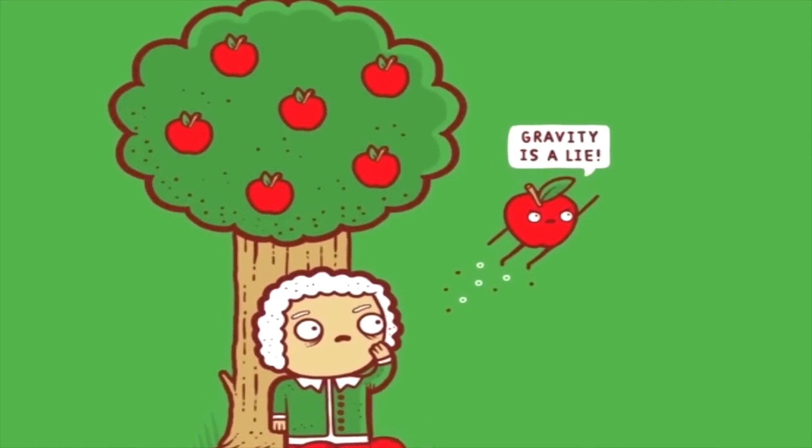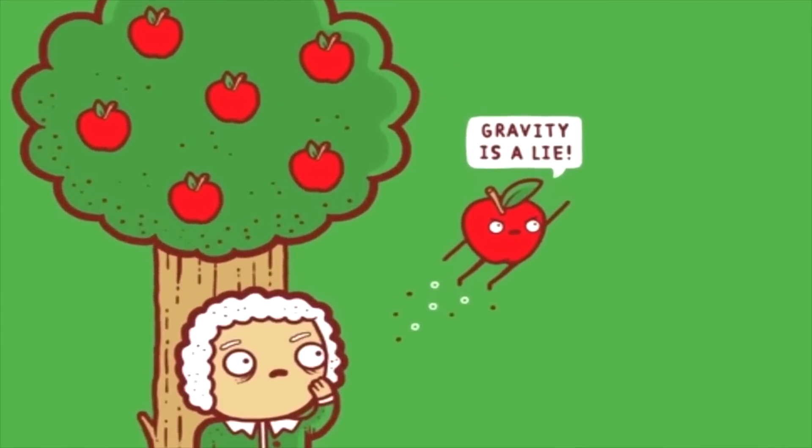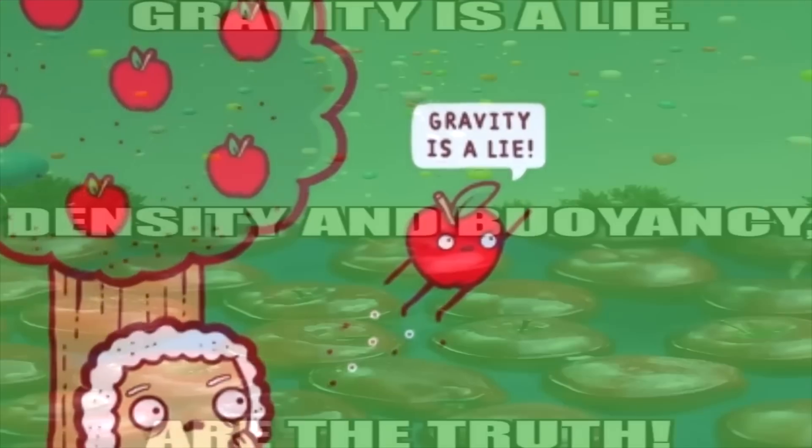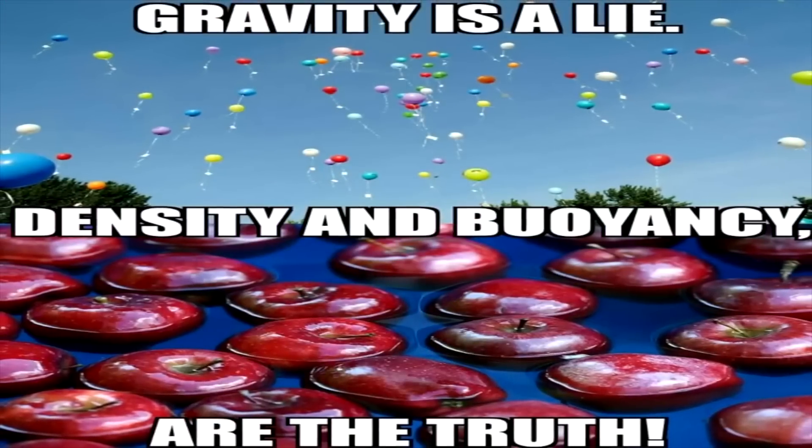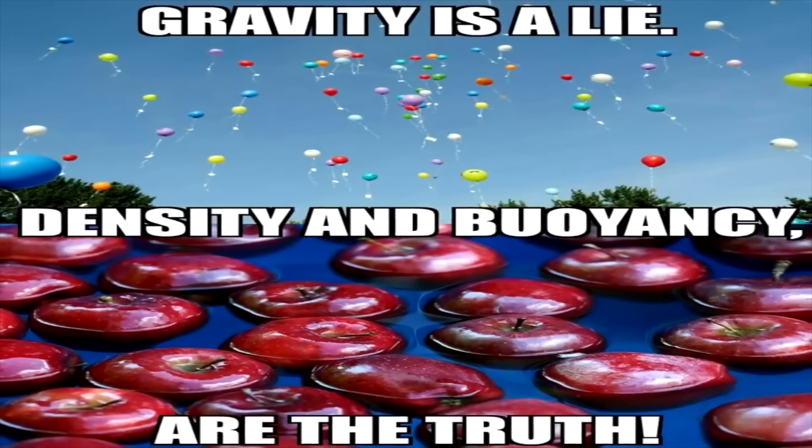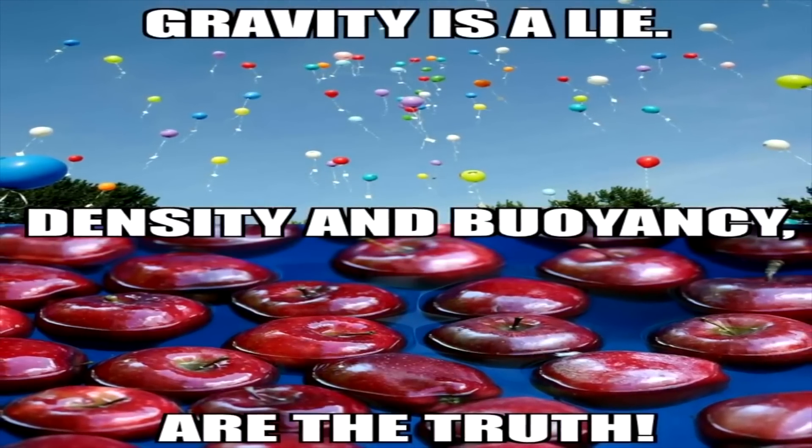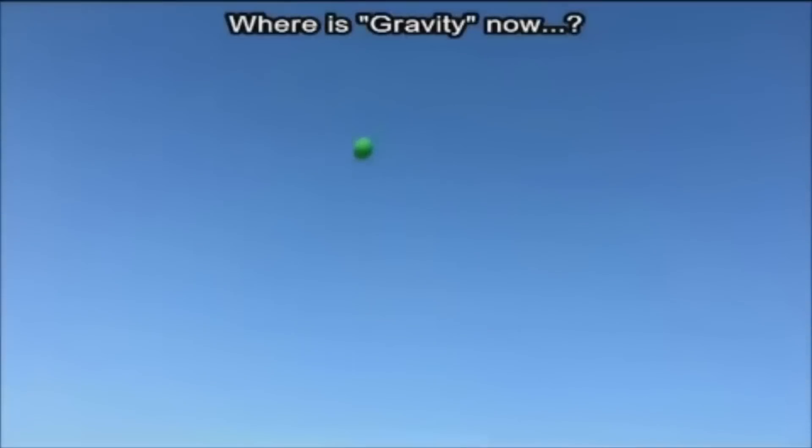Long before the theory of gravity was a glimmer in Isaac Newton's imagination, the natural physics of density and buoyancy already perfectly explained why apples fall down. Quite simply, objects fall or rise based on their relative density to the medium surrounding them.